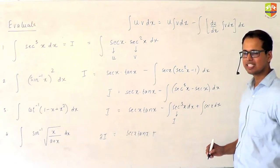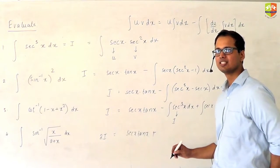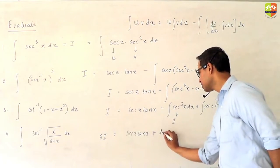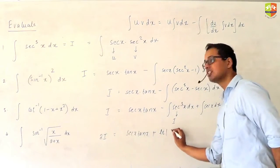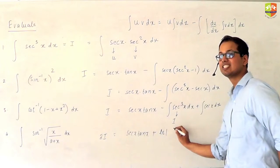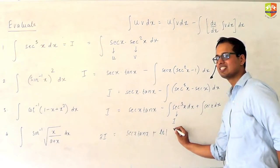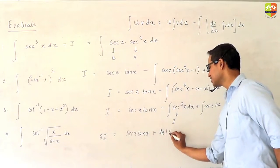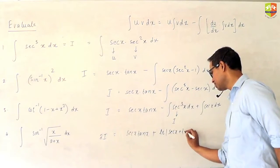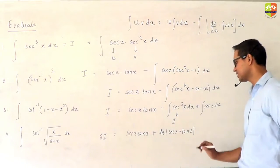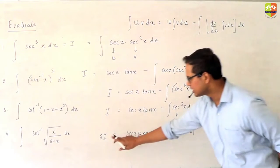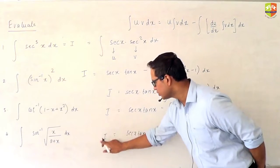So 2I equals sec x·tan x plus the integral of sec x. The integral of sec x is ln|sec x + tan x|. So 2I equals sec x·tan x plus ln|sec x + tan x|, and since this is 2I, I is half of this plus a constant.